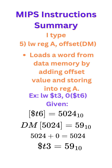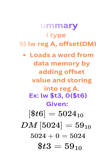Example: lw T3, 0(T6). Whenever you see parentheses around a register, that means it's a data memory address. We're given the contents of T6 is 5024, which is a data memory address, and at data memory address 5024 we have the value 59 stored in it. So we would do 5024 plus 0 — because 0 is our offset — to get address 5024, and then in register T3 we would store the value 59.